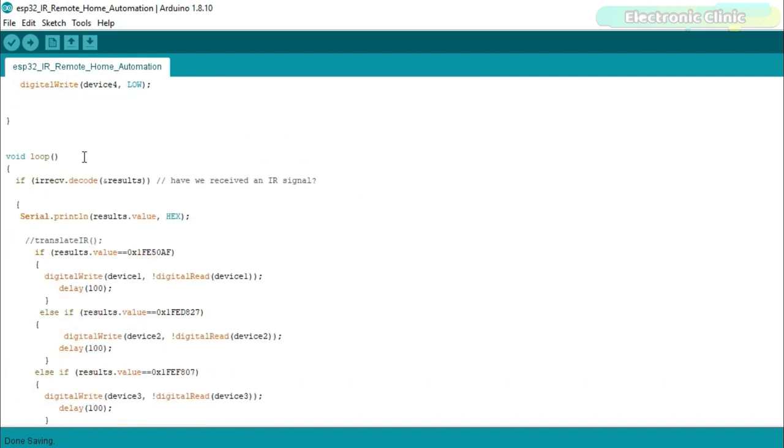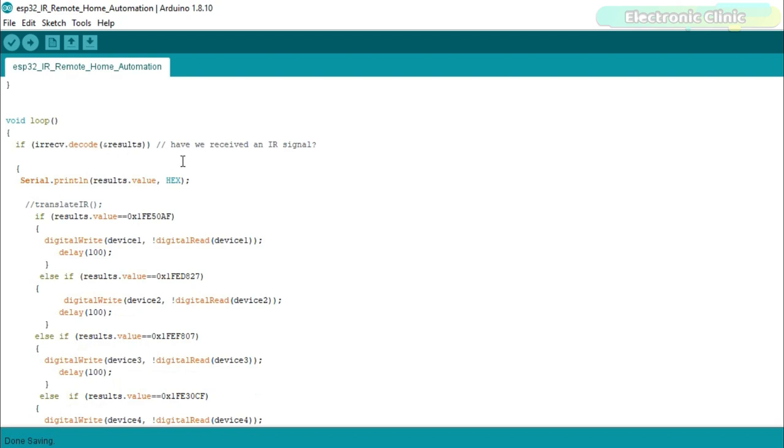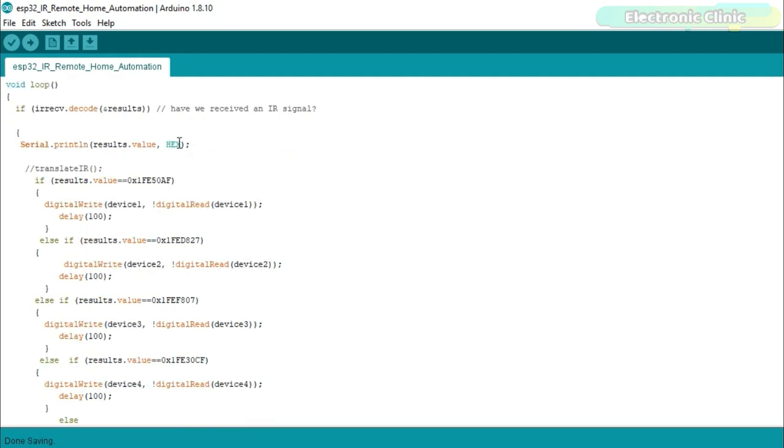Inside the loop function, we check if any data is received from the IR sensor. Let's say if a button is pressed on the IR remote, then this line of code will print its hex value. If you want to use any other IR remote, then simply upload this program, open the serial monitor and start pressing the buttons. The buttons hex codes will be displayed on the serial monitor. Then you can copy those codes and use them in the programming.